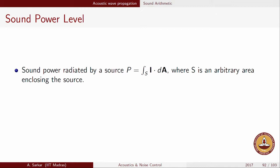From sound pressure level we move on to a new concept of sound power level. Sound power level is defined as follows: for any acoustic source, sound power radiated by a source is given by P equals the integral of I dot dA, where I is the intensity. Generally we will take the time-averaged intensity, as that represents the average power flow per unit area.